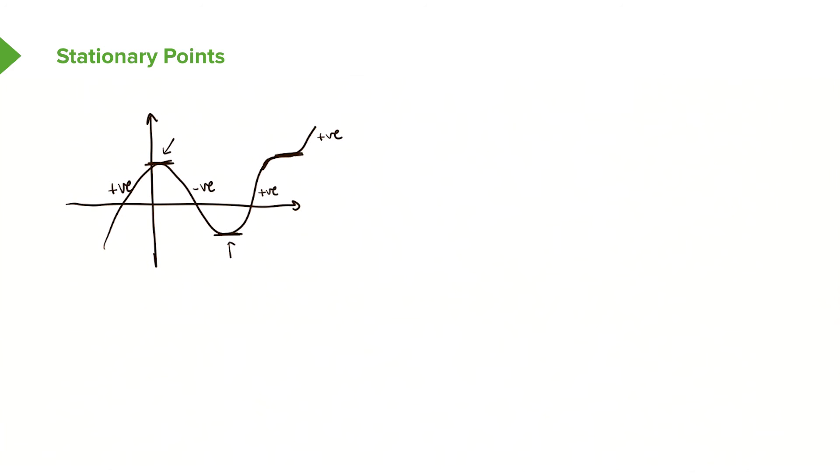Now these parts here are actually known as stationary points. And we call them stationary points because the gradient flattens here. So if we're thinking about this in mathematical terms, at stationary points, your gradient dy/dx equals to zero.